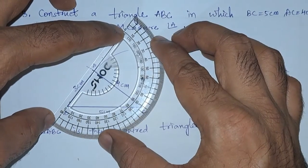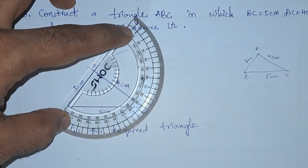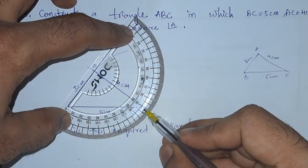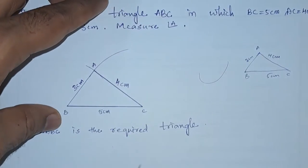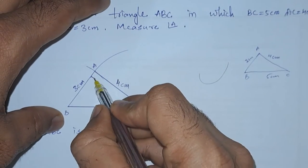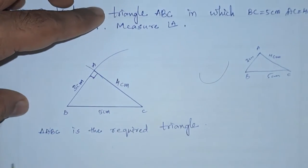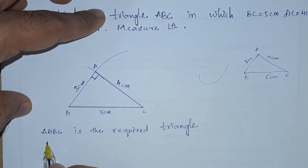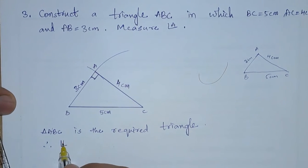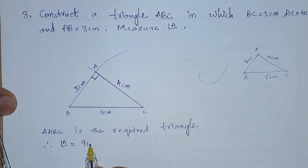Now it is over AB. We can see this angle here is making 90 degrees. So we can write this angle is 90 degrees. Therefore, angle A is 90 degrees.